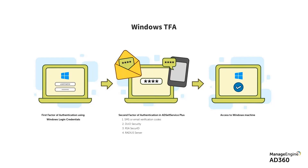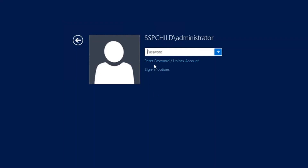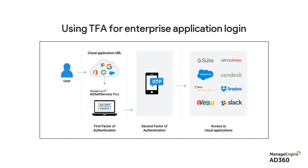In just one step, we're exponentially increasing your organization's security. This is applicable for all users — especially critical users with access to critical business data. One extra layer of authentication ensures an attacker cannot snoop in unless they also have access to the second factor, which is very difficult. But security doesn't just end at login. What if the user left the account logged in, the laptop was unlocked, and an attacker had physical access? That's when you need two-factor or multi-factor for other applications too.